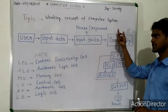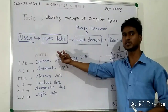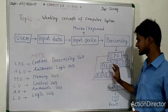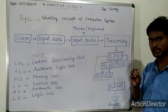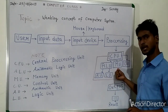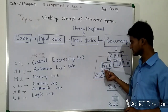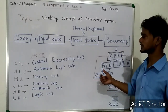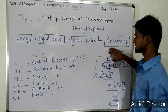After input, the data from the user comes to the CPU for processing. The CPU is the main part. The main parts of the CPU are divided. When the user inputs data to an input device, the user sends it for processing to the CPU.